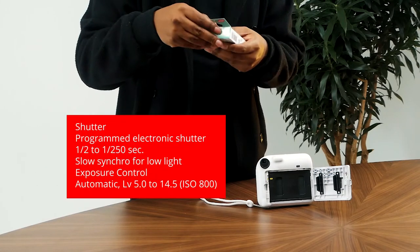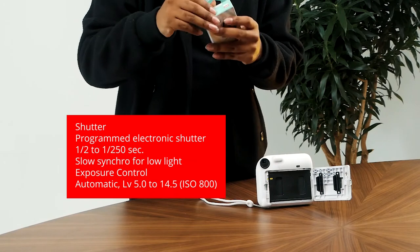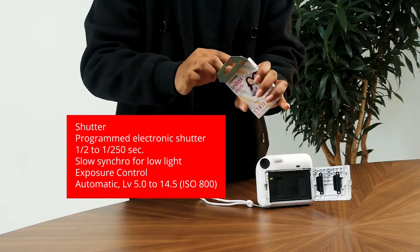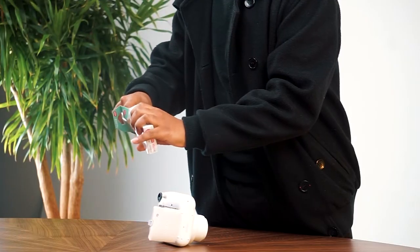Film ejection is automatic, and film develops in approximately 90 seconds, though this time can vary depending on the ambient temperature.